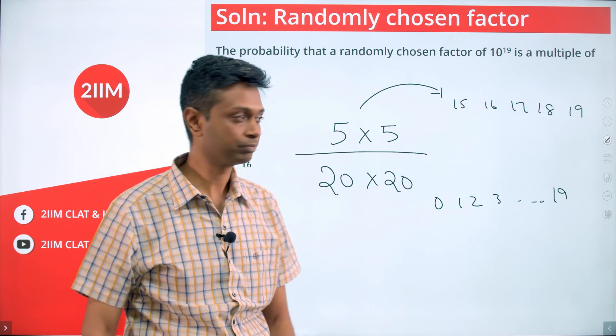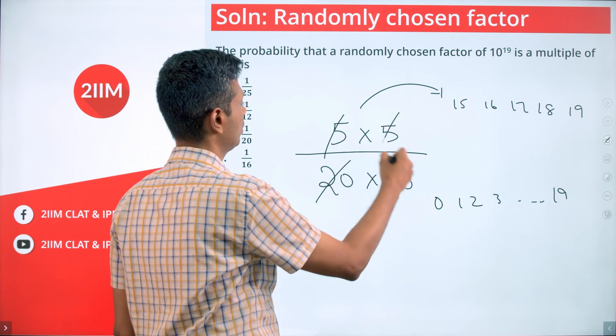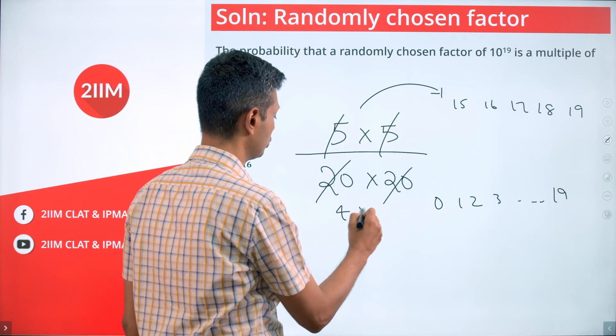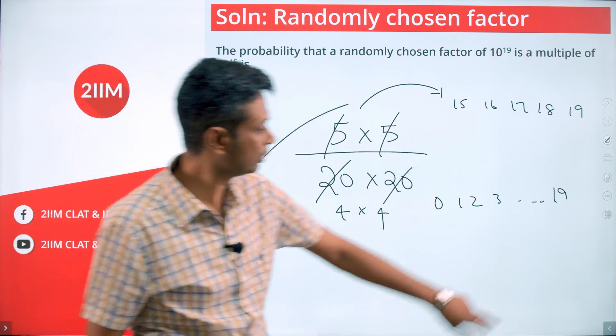5 times 5 by 20, already 1 by 4, 1 by 4, 1 by 4 times 4 is 1 by 16. Lovely!